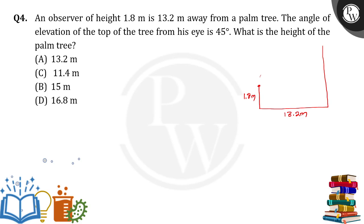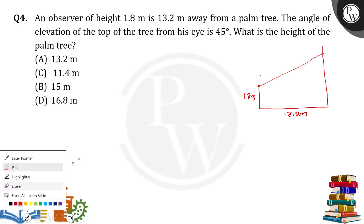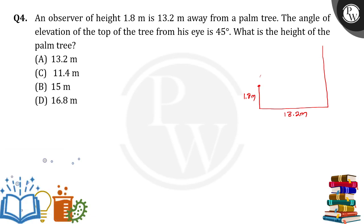So now from this particular point, he is observing the top. From this point, he is observing the top of the palm tree with an angle of elevation. How much angle of elevation is he making? 45 degrees. So we need to draw a parallel line to the horizontal so that we will get here 45 degrees.